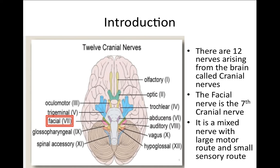There are 12 cranial nerves arising from the brainstem, and the seventh one is the facial nerve. It is a mixed nerve with a large motor and a smaller sensory root.